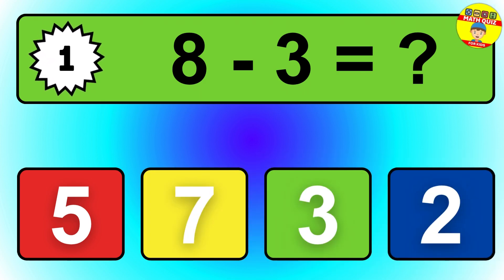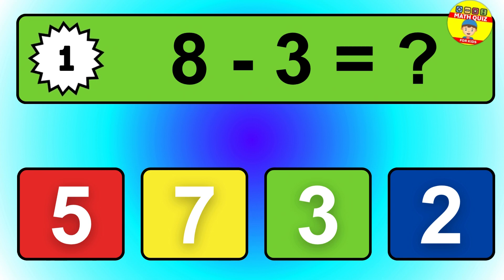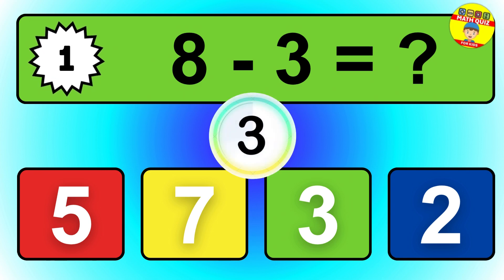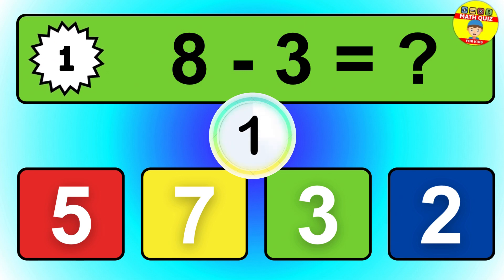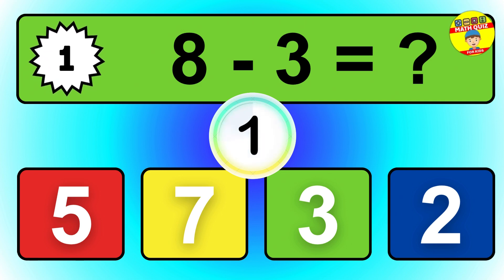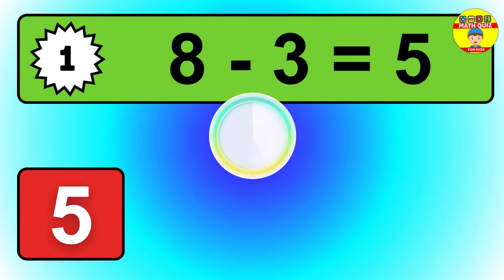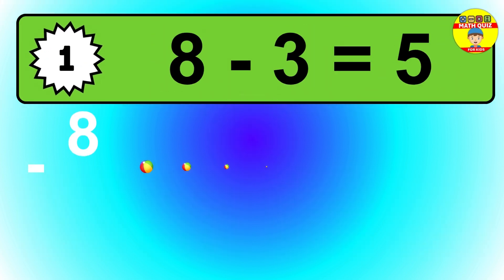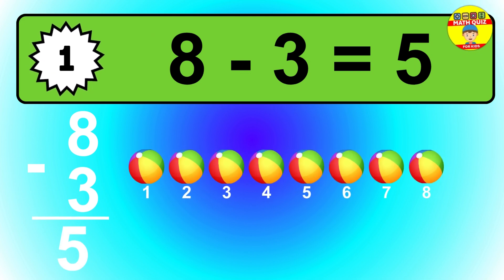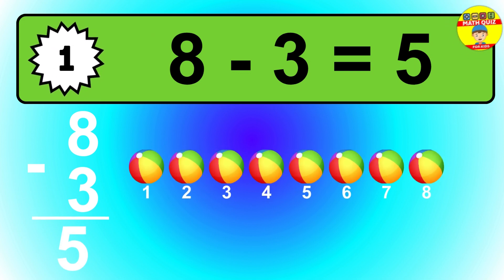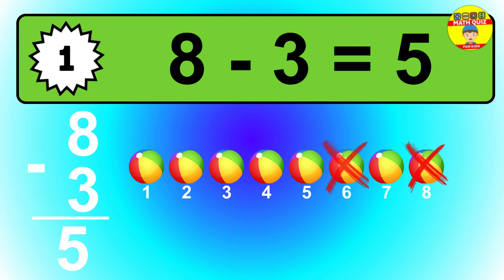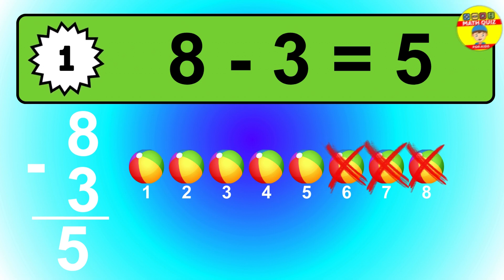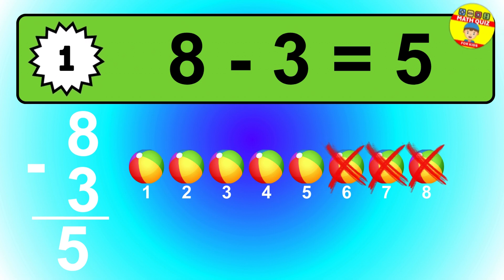Question 1. 8 minus 3 equals what? So the answer is 8 minus 3 is 5. Let's count it: 1, 2, 3, 4, 5.